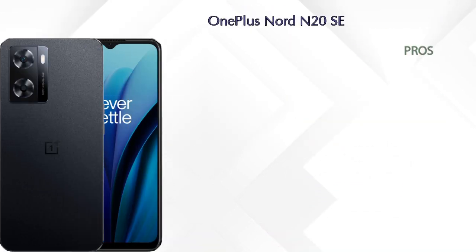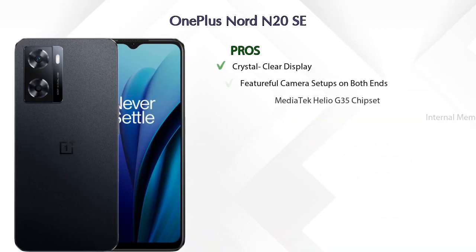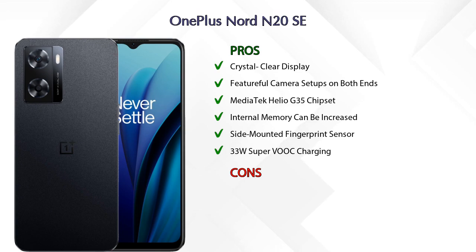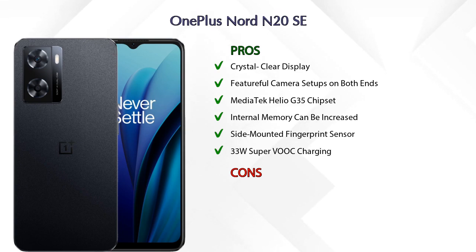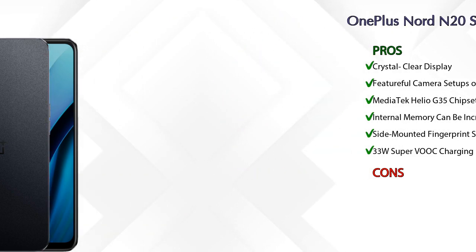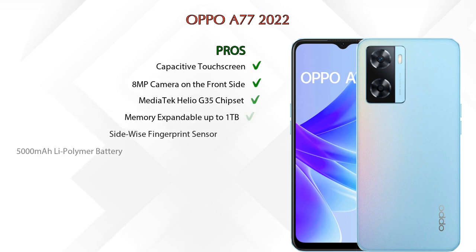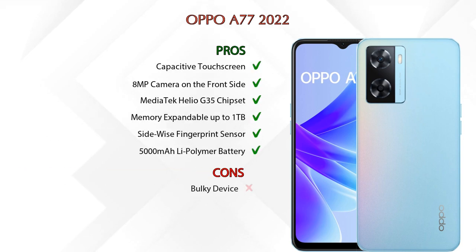Now let's talk about pros and cons. The OnePlus Nord N20 SE has six pros and zero cons. The Oppo A77 2022 has six pros and one con.